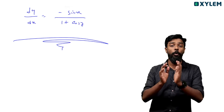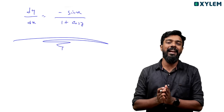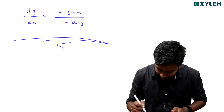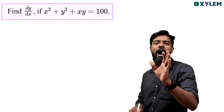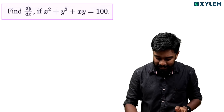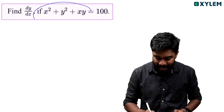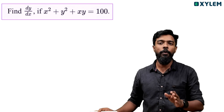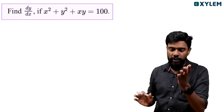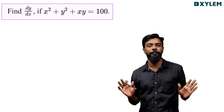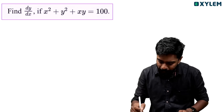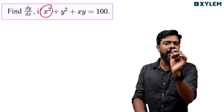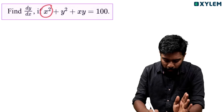So everyone will be able to answer this question. We will ask you how to answer this question. How can we do this one? We have x squared. What is the derivative of x squared? It is 2x.